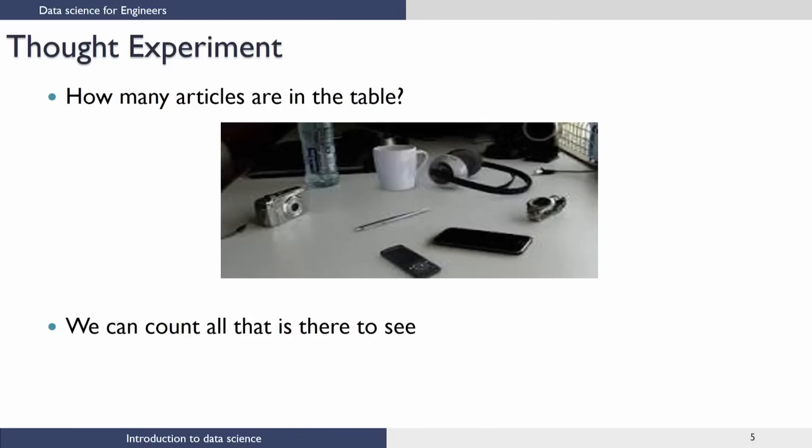One standard question that comes about in data science is whether a particular technique is better than another. The proponent of one technique will say it is the greatest, and the proponent of another technique will say the same — and this debate keeps going on and on. I am going to give a slightly different view of why we have so many techniques, and in some sense resolve the question of which technique is better. To do this, let us do a thought experiment. We have many objects on a table shown in the slide.